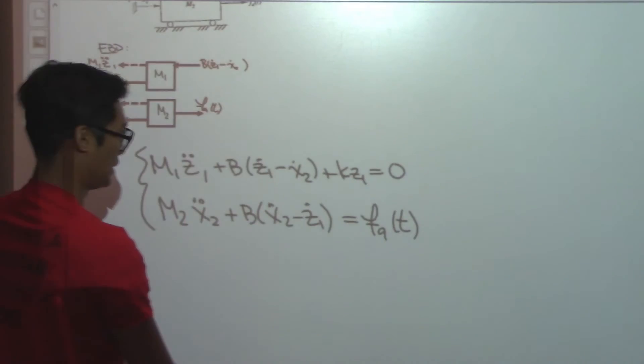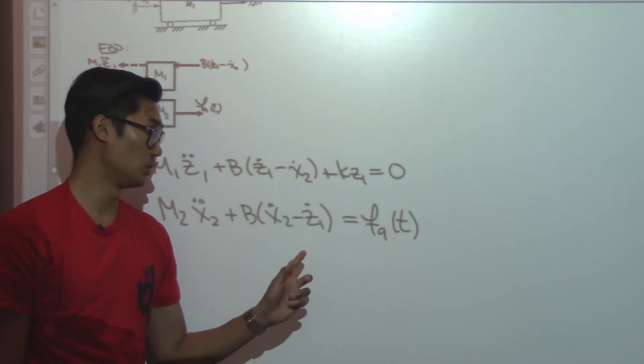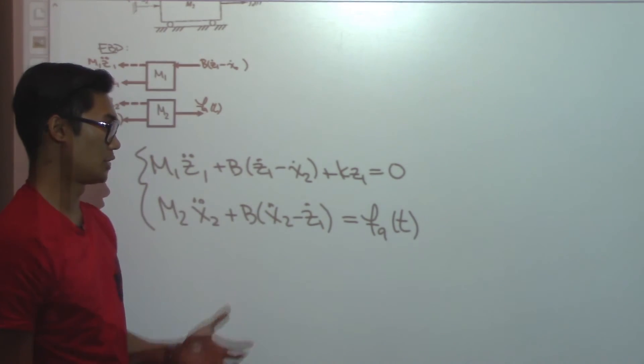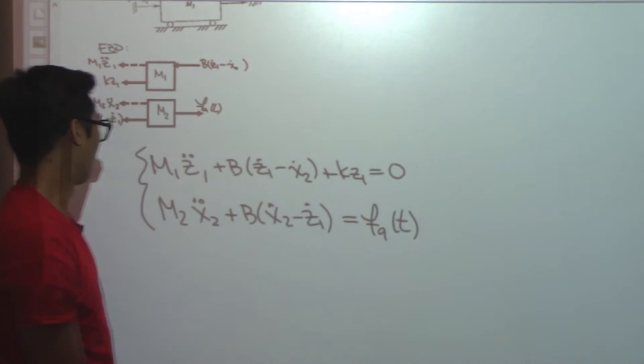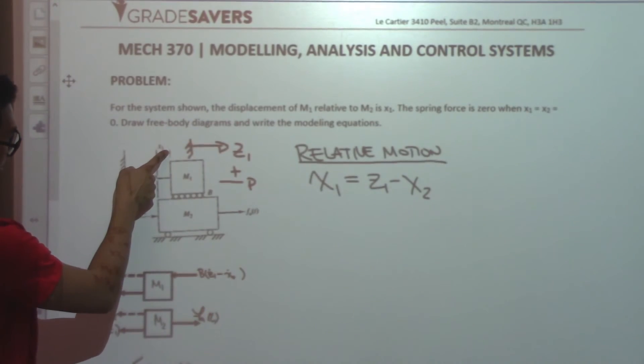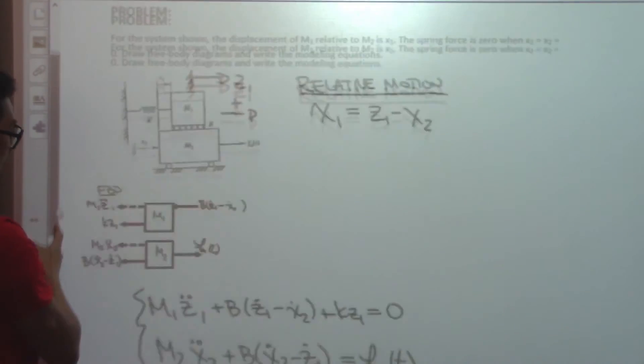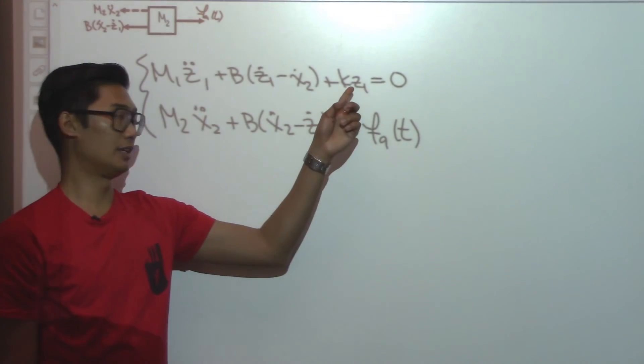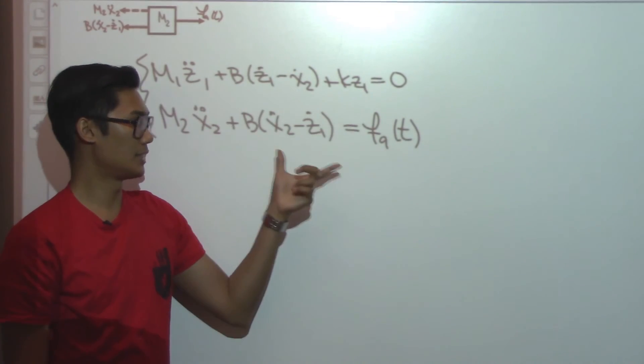So here is your system of equations. Now what's really important to note is that the solution does not want Z1. If you look back in this diagram, we're given in terms of X1 and X2. So what we need to do here is we need to get rid of Z1 in these set of equations.